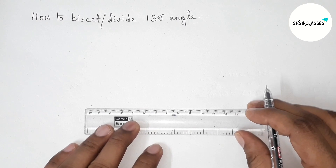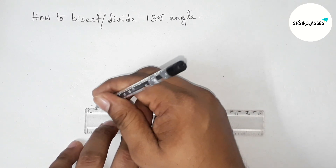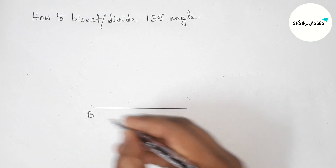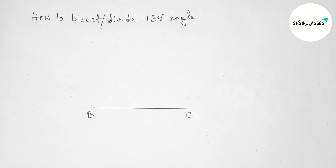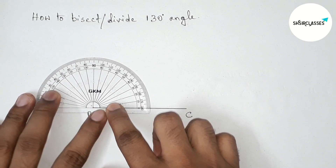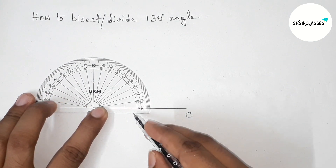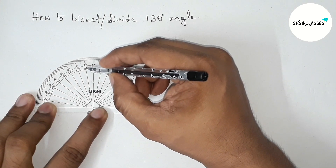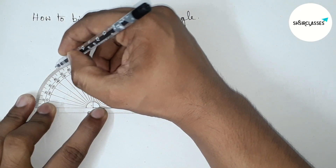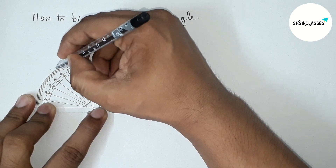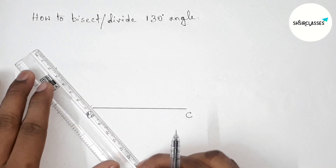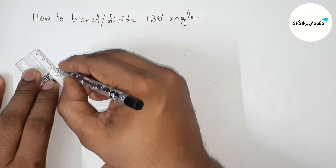First of all, let us draw a 130 degree angle. Drawing a line segment, then taking point B here and point C. Next, drawing 130 degrees on point B by putting the protractor on point B perfectly, then counting: 90, 100, 110, 120, 130. So this is the 130 degree angle. Marking here and joining the line to get the 130 degree angle.